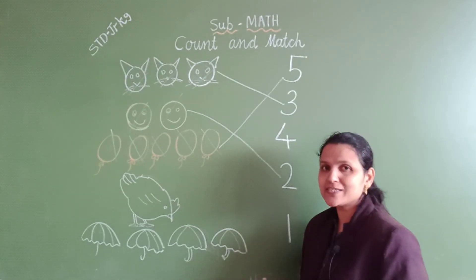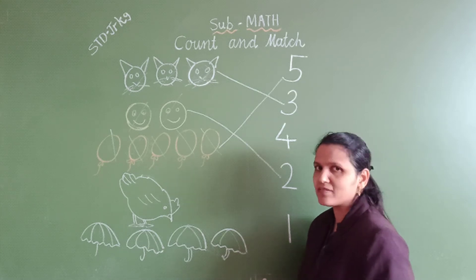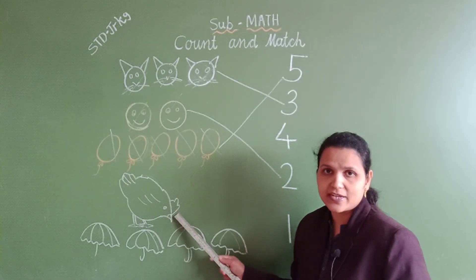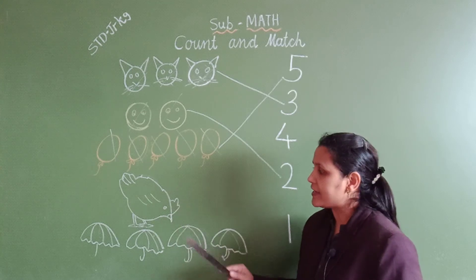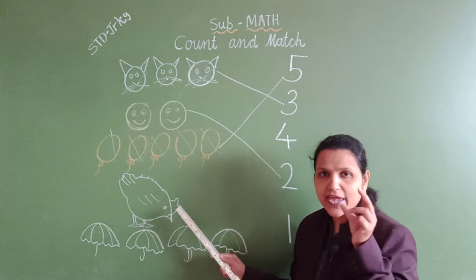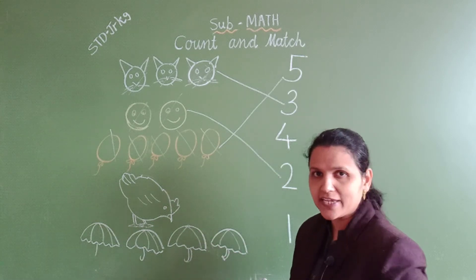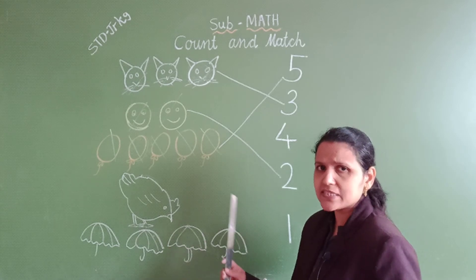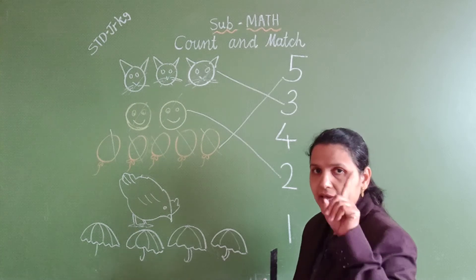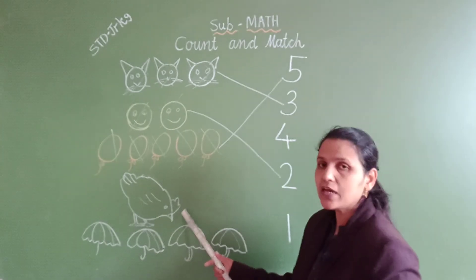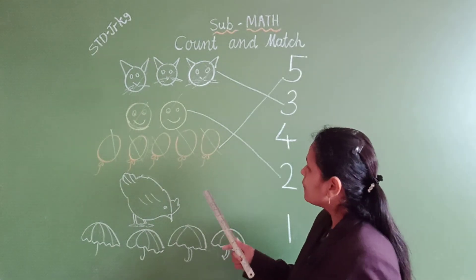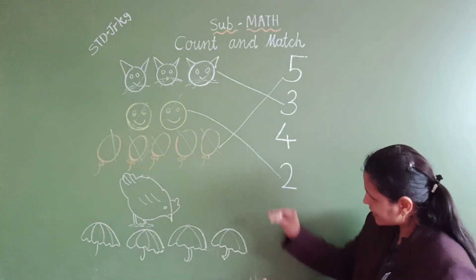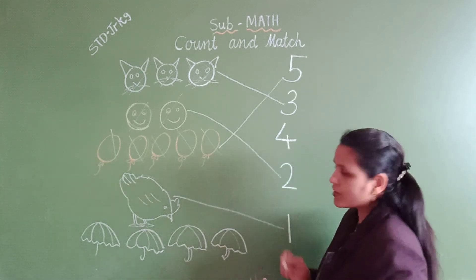And what is this? It looks like a bird — it is a hen! Hen gives us eggs. How many hens are there? One only — one hen. So we have to match this hen with number one. Do you understand?